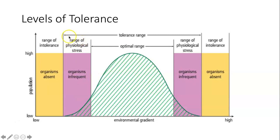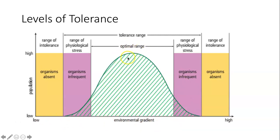We also see a tolerance range — the organism can tolerate those conditions, but it's experiencing some physiological stress. It's not doing well, so organisms are going to be infrequent and survival and reproduction will be less. Then we get to what is called a range of intolerance, where organisms simply cannot survive and will be absent. You can apply this to temperature, pH, oxygen levels, or sunlight. Whatever the optimal range is for that species, that's where it does best.